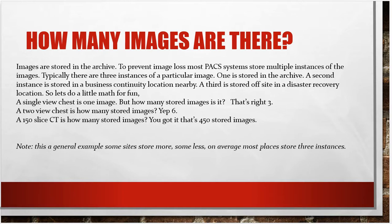Images are stored in the archive, and to prevent image loss, most PACS systems store multiple instances of each image. Typically there are three instances: one stored in the archive, a second stored in a business continuity location nearby, and a third stored off-site in a disaster recovery location. If you store all three copies in the same building and that building is destroyed by a disaster, you've lost all three copies.